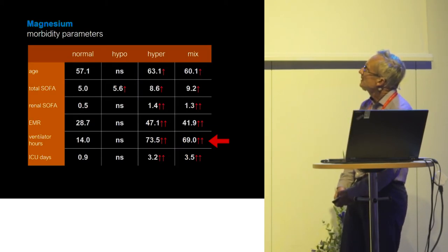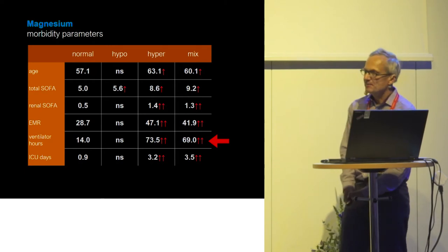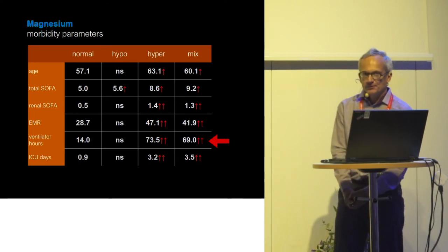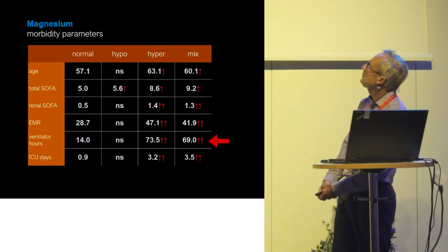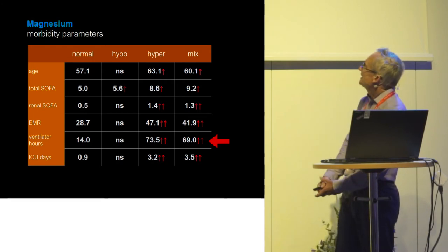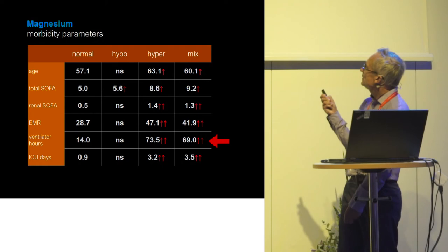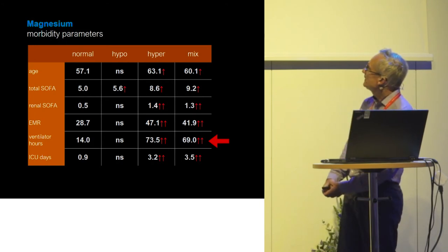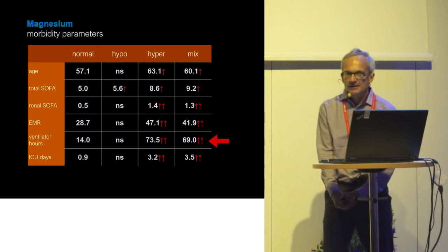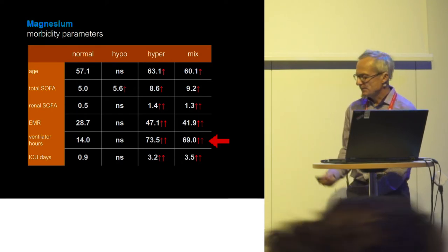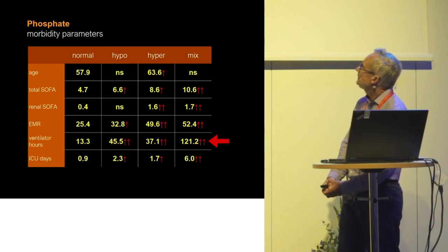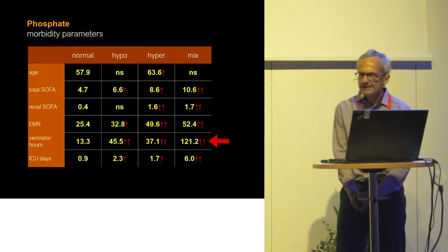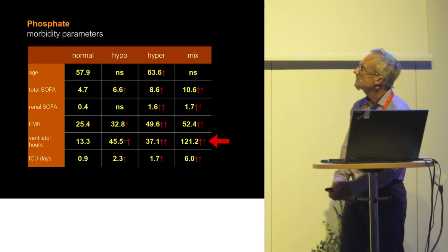Looking at morbidity parameters, the hypomagnesemia groups do not show altered comorbidity parameters compared to controls, whereas both the hyper group and the mixed group are much sicker. Looking at the line of ventilator hours, in the mixed group with a variable magnesium profile, we have about five times longer ventilation hours compared to controls, and in the mixed group with a variable phosphate profile, we have actually 10 times longer ventilation times compared to normal.